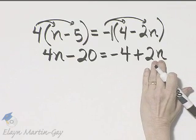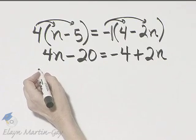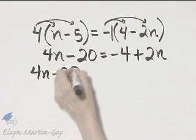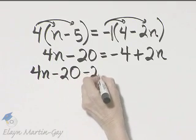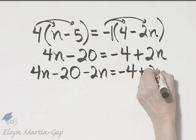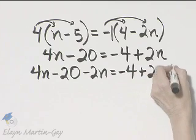I'll begin by subtracting 2n from both sides. So I'm simply going to rewrite my left side and I'll subtract 2n. I'll rewrite my right side and I'll subtract 2n.